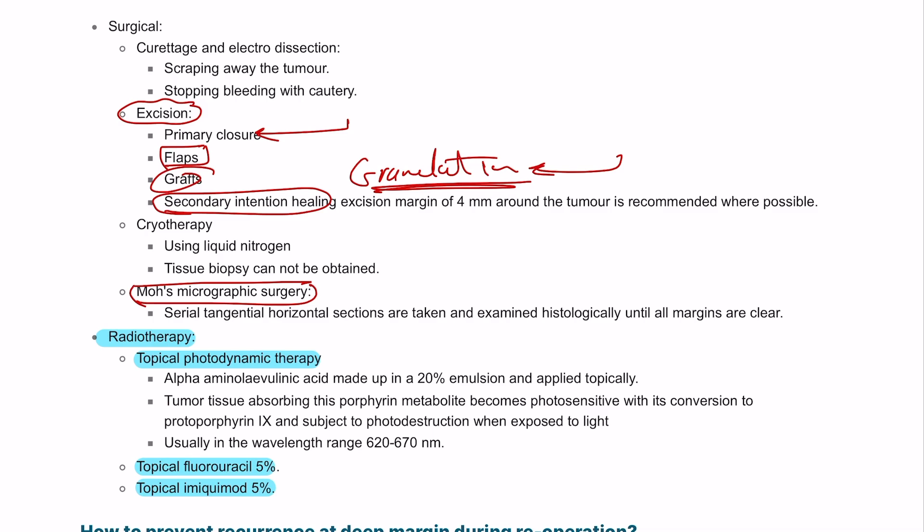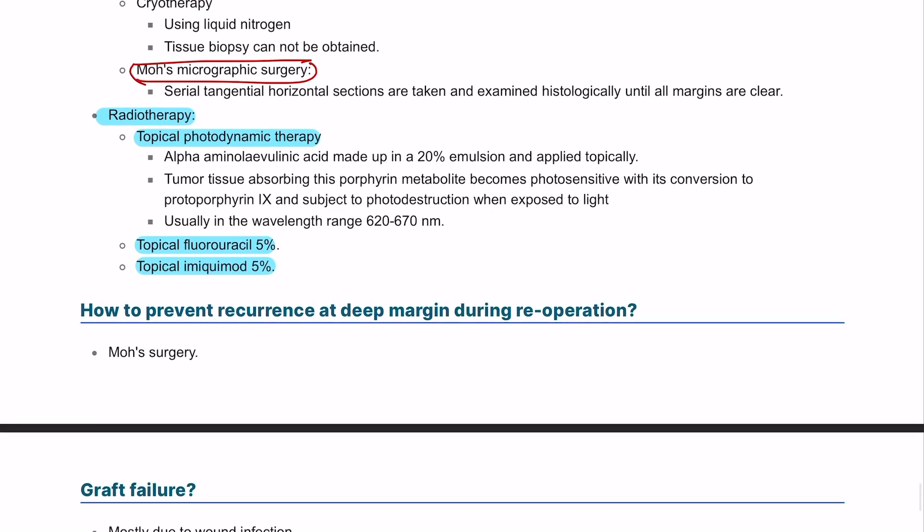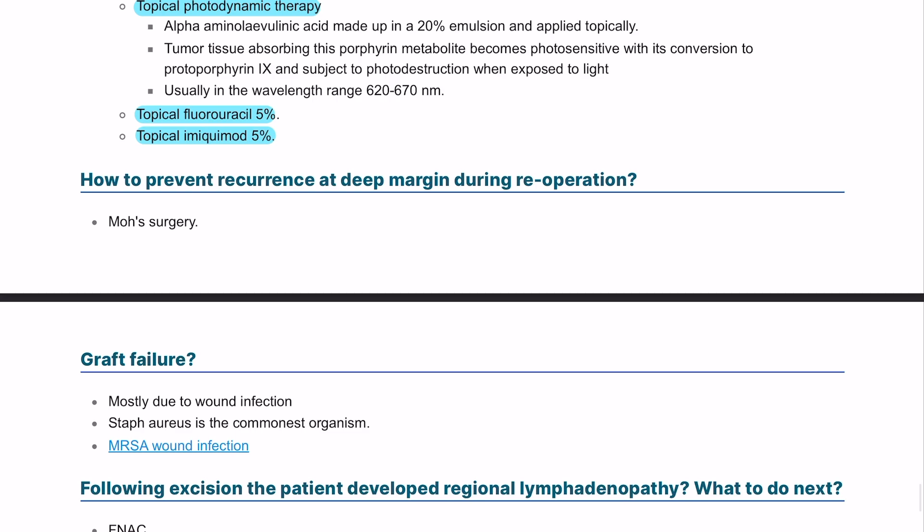Additional surgical options include excision with cryotherapy, Mohs surgery, curettage, or axillary dissection. To prevent deep margin invasion, Mohs surgery is the best approach to ensure all tumor is removed from the patient.